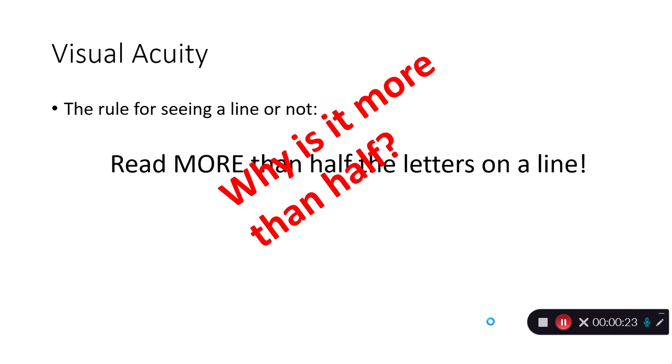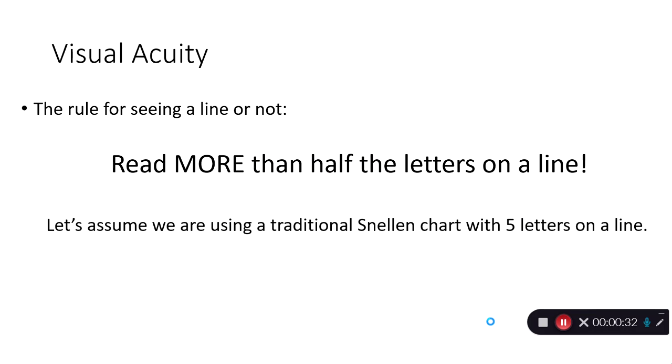But why do we have that as a rule? We could have a rule that they have to read all the letters on a line, or exactly half, or 75%. Why is it more than half? Well, let's assume we're using a traditional Snellen chart with five letters on a line. That means the patient needs to be able to read three letters correctly to see that line, three being more than half of five.